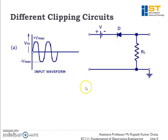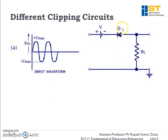We can also apply a biasing voltage to the clipper circuits — either in series with the diode or with the resistance. When a biasing voltage is applied, we must analyze the resulting bias condition of the diode using the conditions from the first slide. For example, when negative polarity is applied to the negative terminal of the diode, the diode is in forward bias at zero input voltage.